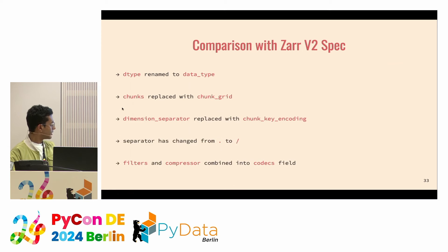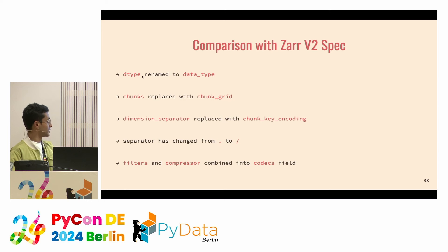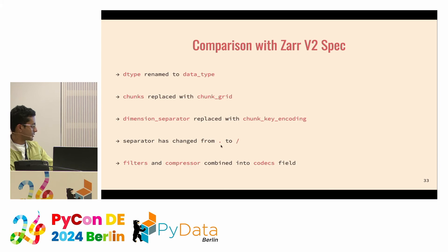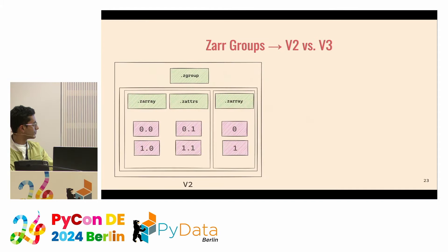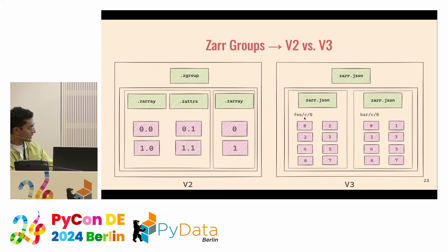A couple of things were renamed when comparing Zarr v2 metadata with v3. The dtype field is renamed to data type. Chunks are replaced with chunk grid. Dimension separator is replaced with chunk encoding. And the separator is changed from dot to forward slash — so instead of 0.1, 1.1, the address of the first chunk is now foo/c/0/0, and 0/1 would be the address of the second chunk, and so on.